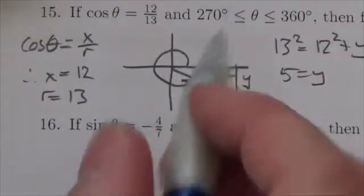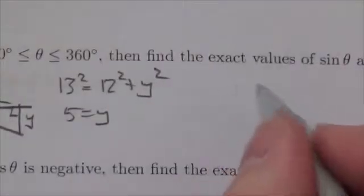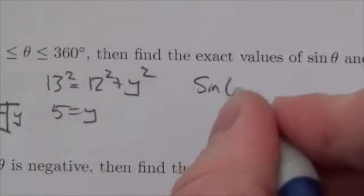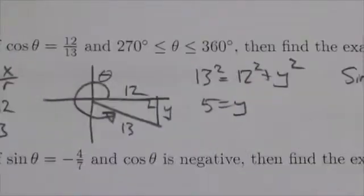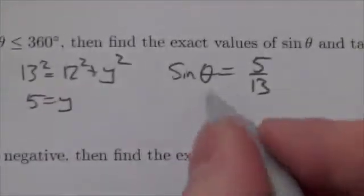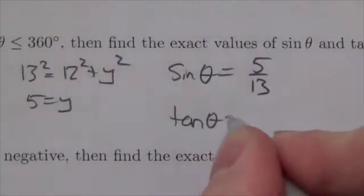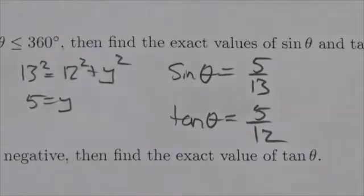But now, sine of theta is going to equal the y coordinate over r. So I will write here that the sine of theta is going to equal 5 over 13. And tangent is defined as the y over the x. I know that the y is 5, so I can say that the tangent of theta will equal 5 over 12. And those are the two ratios that we were looking for.